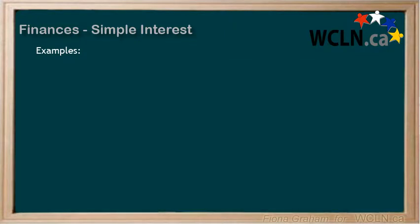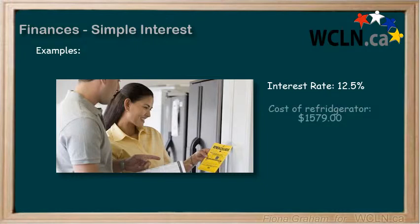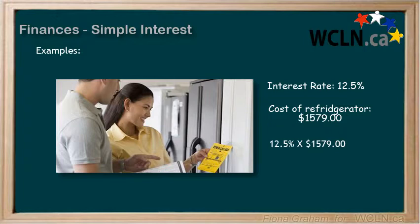Let's do an example where a person gets charged interest. In this example, a person is buying a refrigerator from a department store that is charging simple interest at a rate of 12.5% annually, and they don't pay anything until the end of the year. The refrigerator costs $1,579. To calculate the interest the person would have to pay, we would calculate 12.5% times $1,579, which would give us $197.375, which we would round to $197.38.